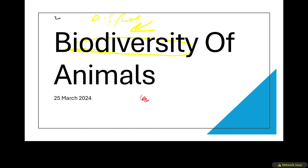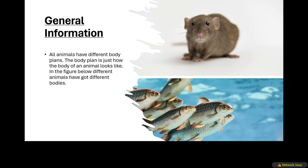So the general information: remember that all animals are different because they've got different body plans. A body plan simply means how does the body of an organism look like. For example, this is a rat — it looks like a rat — and this is a fish and it looks like a fish. So they've got different body plans.